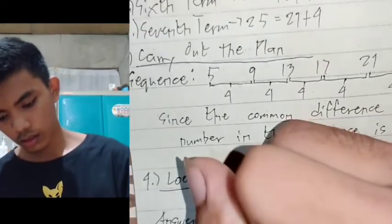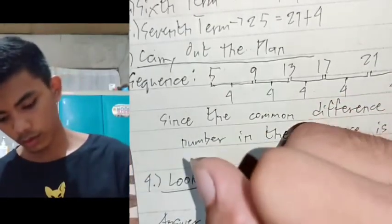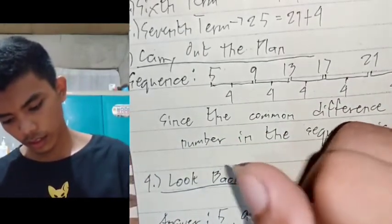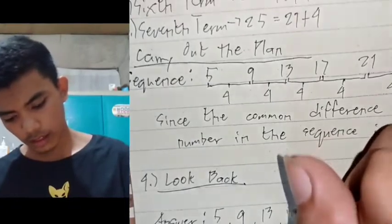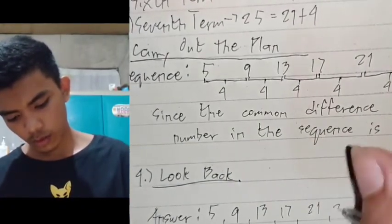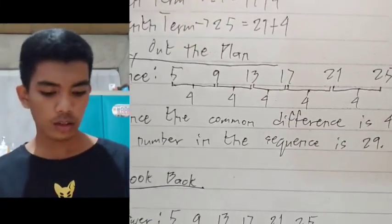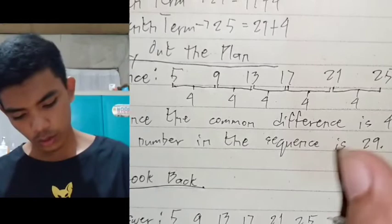We could say that the answer is... We would have to write the sequence first. So 5, 9, 13, 17, 21, 25, and the missing number, which is 29. And that's it.